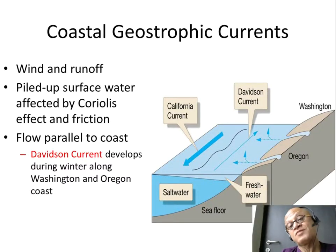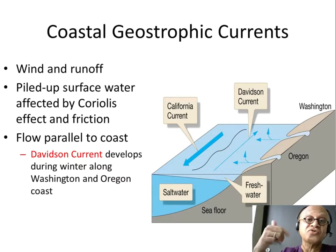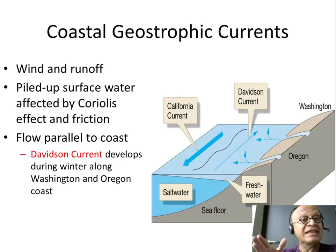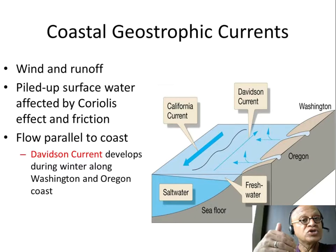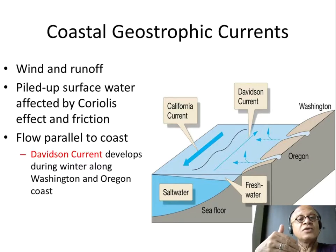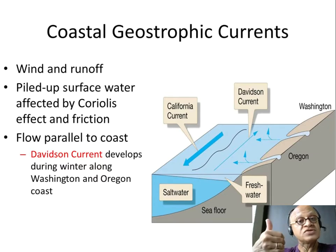Remember your concept of Geostrophic Currents. On a rotating planet, Coriolis balances the pressure gradient force, and along the coast you have winds which are pushing the water along the coast. You add Coriolis and the water could be either going away from the coast or towards the coast.